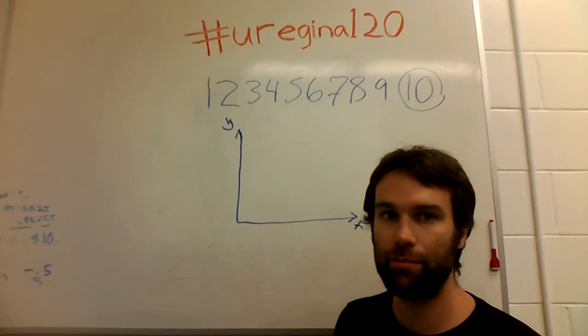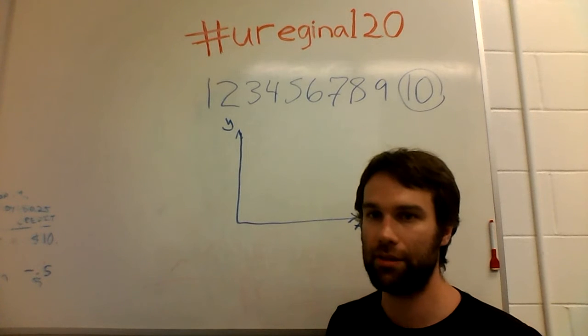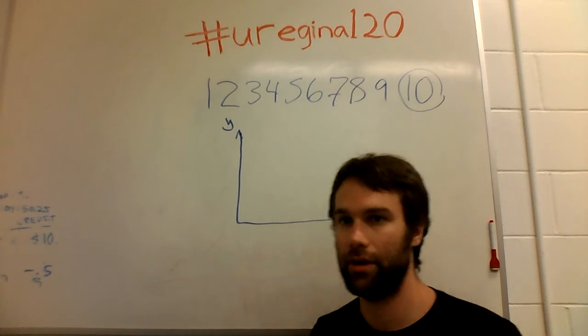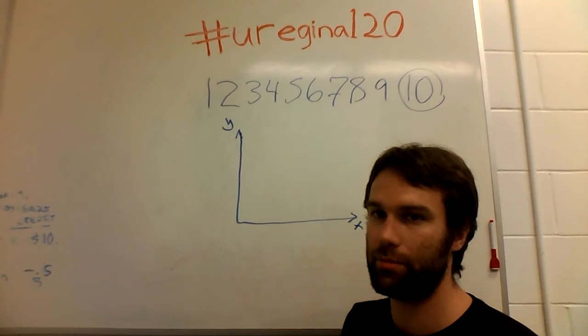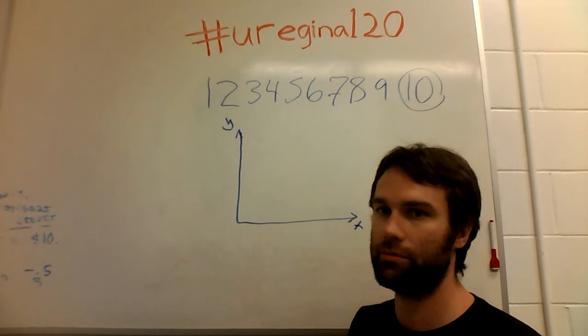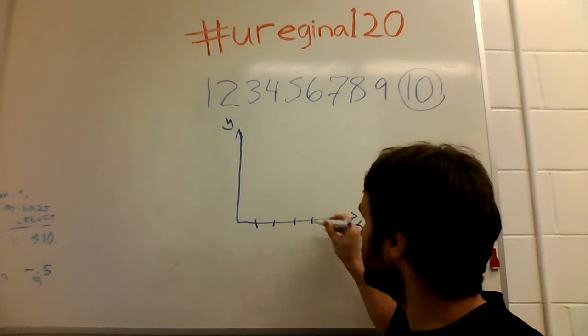So the idea here is polynomial interpolation. And the goal here is you're given a set of points, very similar to how you're given a set of numbers in the original problem. So let's take a look at an example set of points.